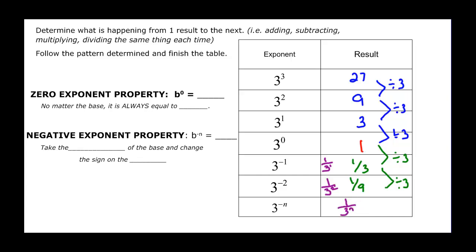So we had two properties going on here. The zero property: anything to the zero will be 1 — no matter what the base, it's always equal to 1. I could have a big fraction with about 10 things in it, but if the zero is on the outside of the parenthesis, it would be 1.